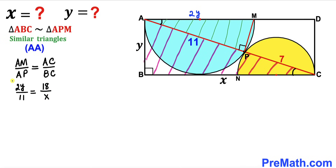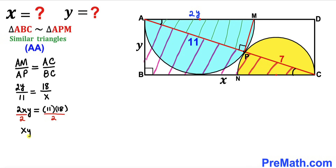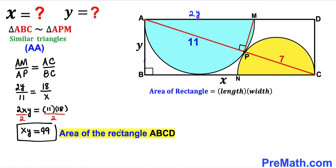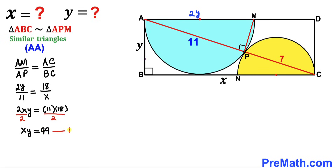Cross-multiplying gives us 2xy = 11 × 18. Dividing both sides by 2, we get xy = 99. This is equation one. Since the area of a rectangle equals length times width, and our length is x and width is y, the area of rectangle ABCD is 99 square units.